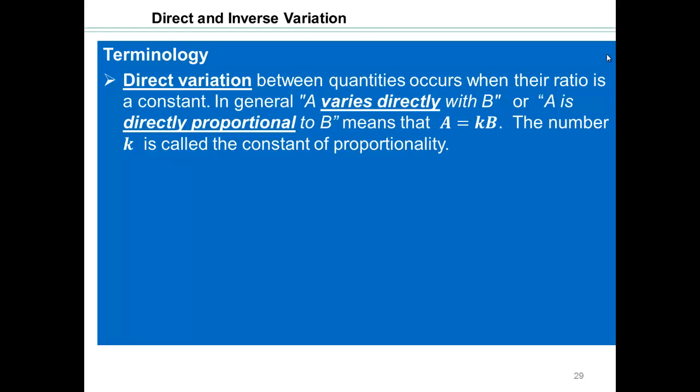In general, we say a varies directly with b, or a is directly proportional to b, meaning a equals k times b. So for example, if I say a student's grade is directly proportional to how many hours of studying they do, then that's a direct variation.